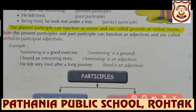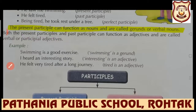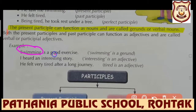Present participle means first form plus '-ing'; past participle means third form of the verb. Keep remembering these terms. 'Swimming is a good exercise' - here 'swimming' is a gerund because it works as a noun in the sentence. 'I heard an interesting story' - it is a present participle because it is working as an adjective.